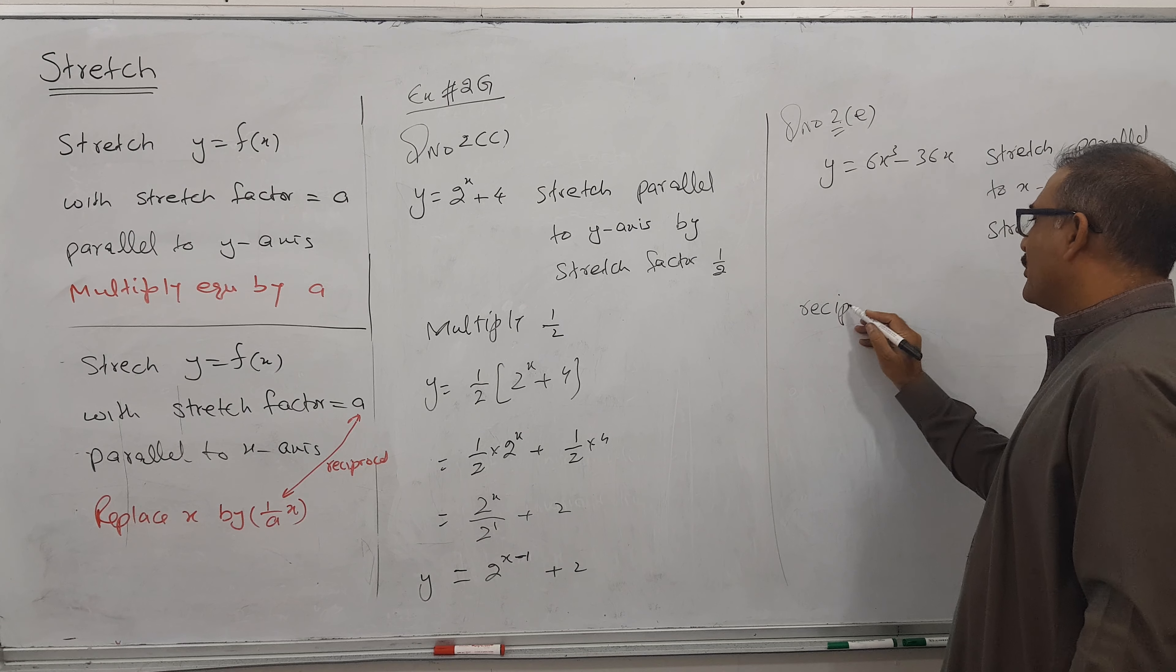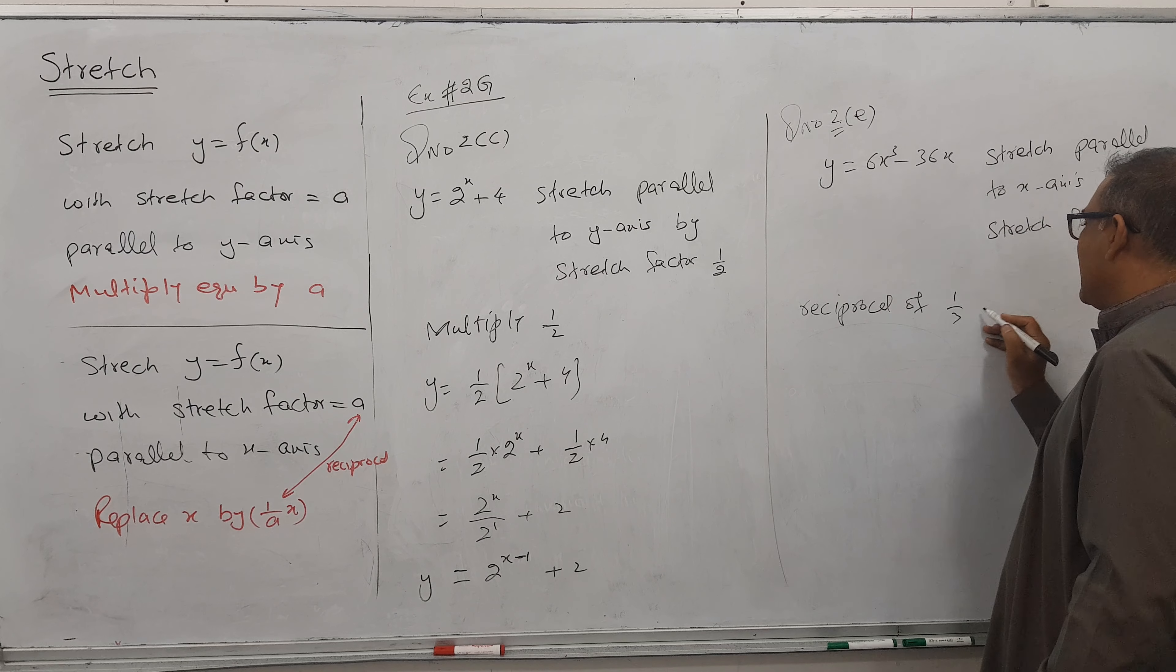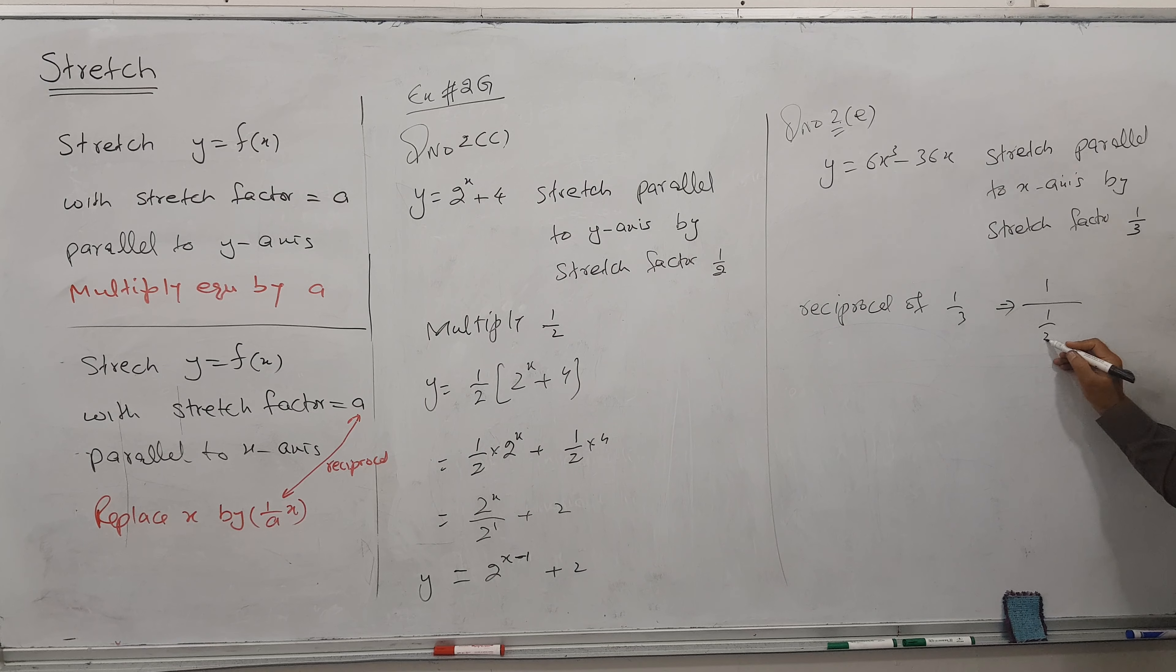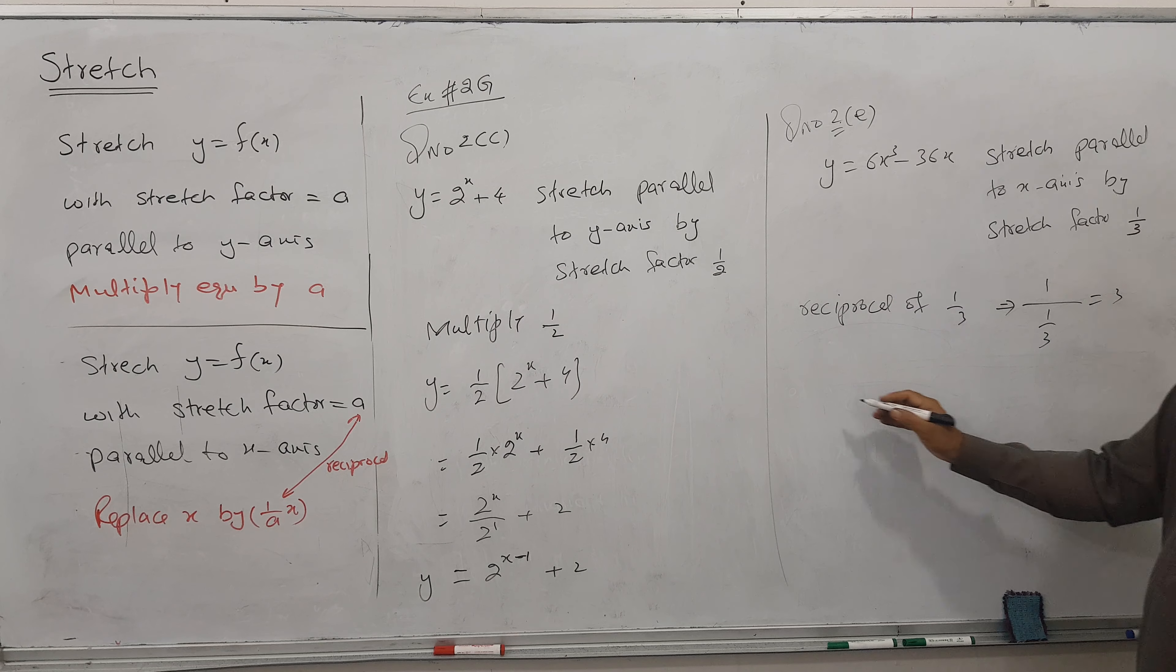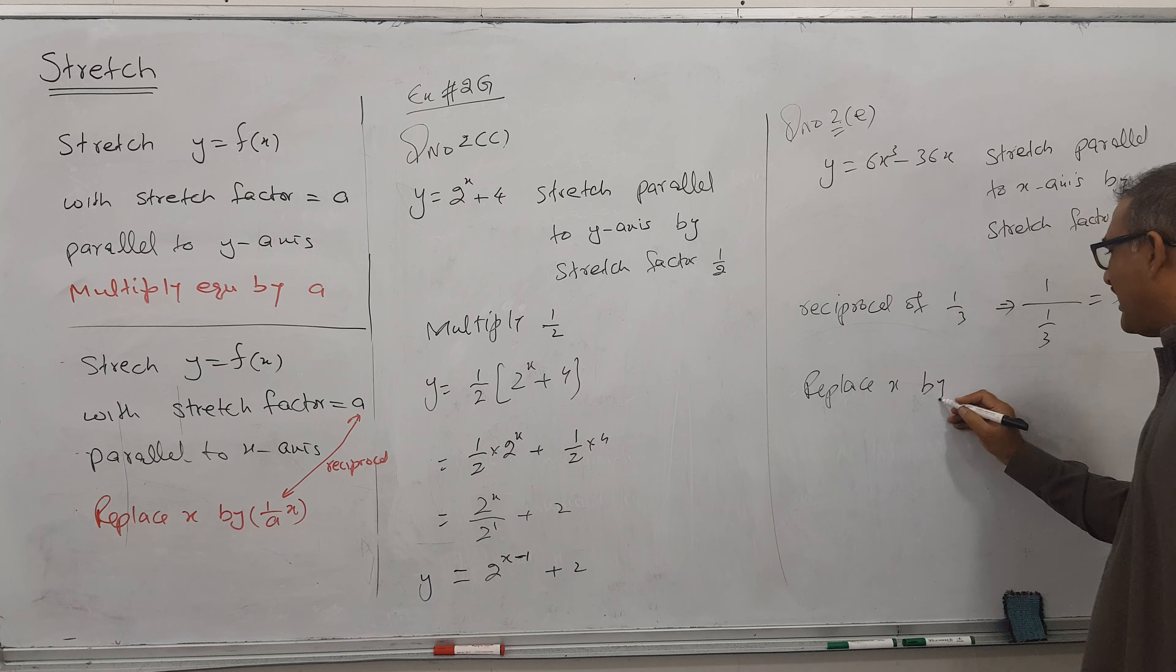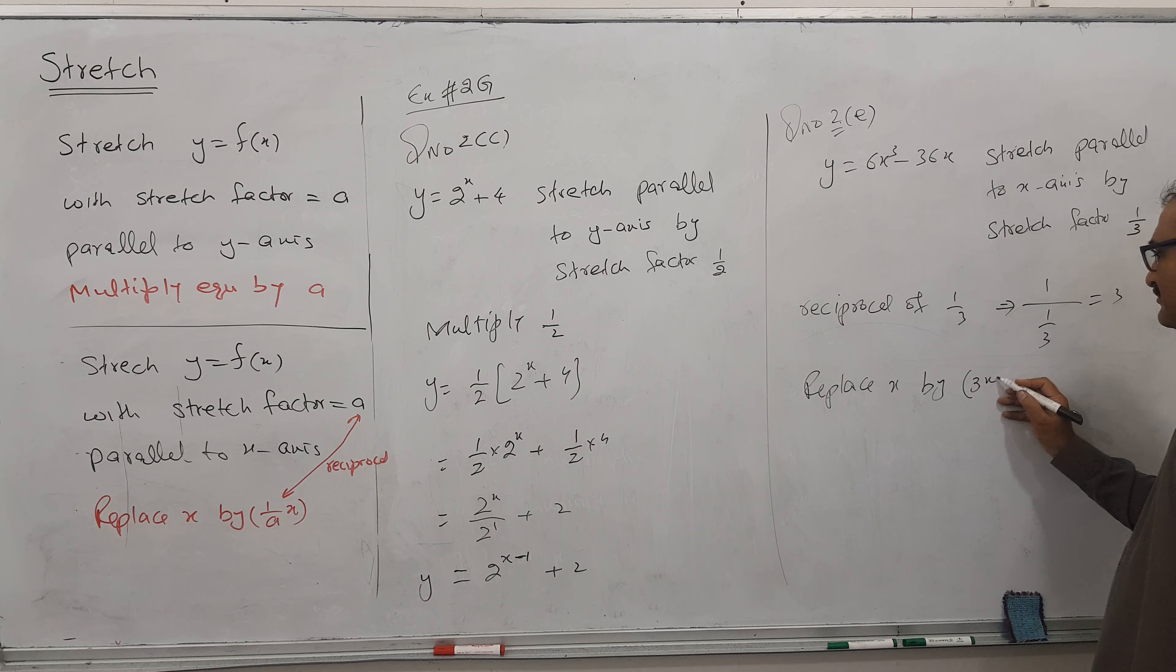So reciprocal of 1/3 is what? 1 over 1/3, it flips, it becomes 3. So replace every x, replace every x by 3 × x.